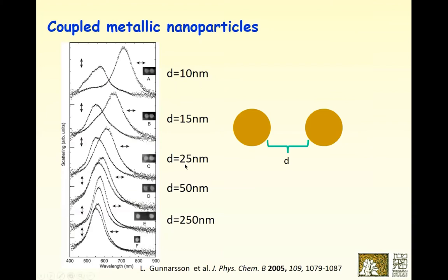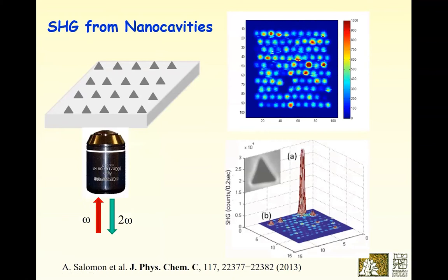The reason is that there is an evanescent field inside the metal similar to the picture Tal showed. The field between the gold metal and the air decays over tens of nanometers, and therefore when the distance is more than these tens of nanometers the particles do not know of each other. We saw this when we measured second harmonic generation from individual such cavities — illuminating with red, looking at back-reflected green at 2-omega — and we see individual responses from the individual holes.